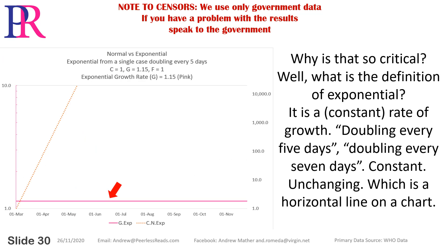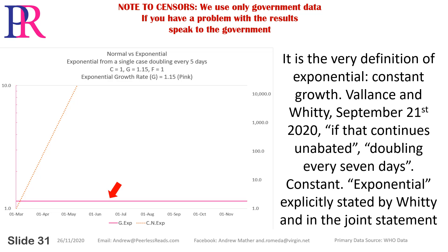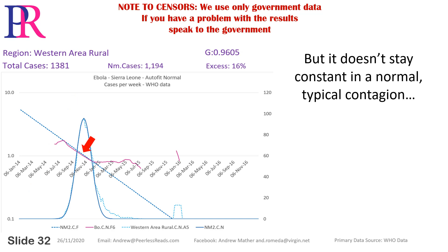Why is that so critical? The definition of exponential is a constant rate of growth — doubling every 5 days, doubling every 7 days. Constant. Unchanging. Which is a horizontal line on a chart. It is the very definition of exponential: constant growth. Vallance and Whitty, September 21, 2020: 'If that continues unabated, doubling every 7 days.' Constant. Exponential — explicitly stated by Whitty and in the joint statement. But it doesn't stay constant in a normal or typical contagion.